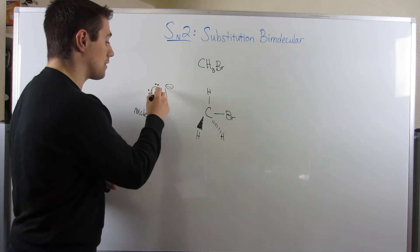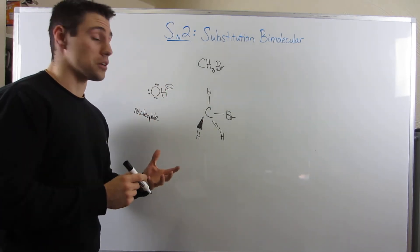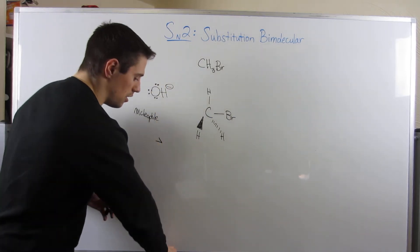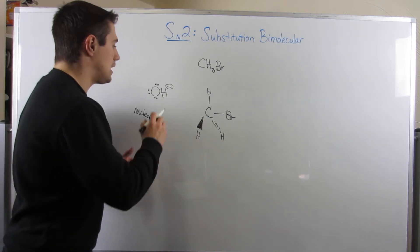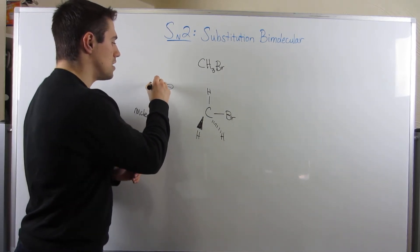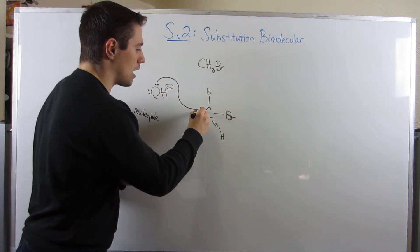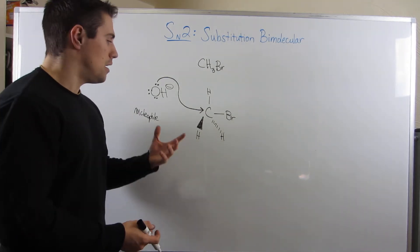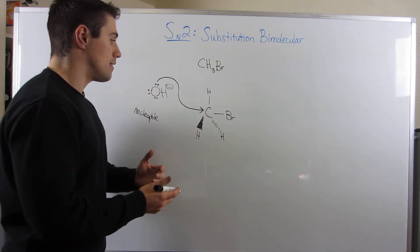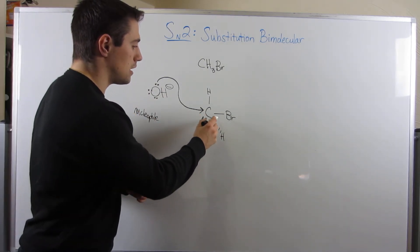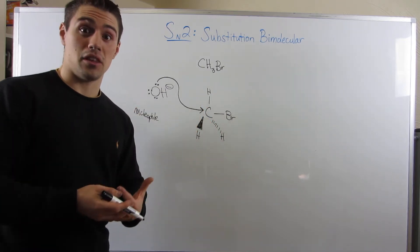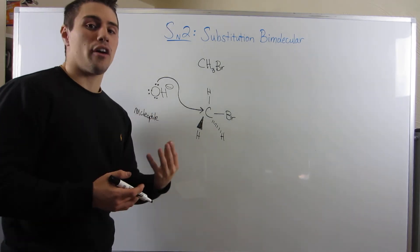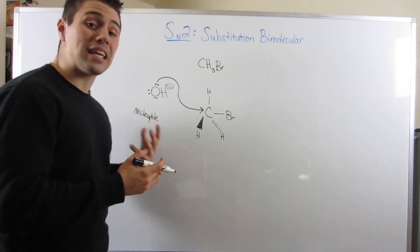He actually takes an electron pair — I'm going to draw a mechanism here. I'm going to move two electrons, so I'll use a double-headed arrow. He's going to take these two electrons and swing in, and try to bond to this carbon. But if I form a bond with this OH and this carbon, I'd have five bonds, and that does not fly with the octet rule. So while this bond is forming, we need to kick off a group — we need to break a bond. Something has to go.